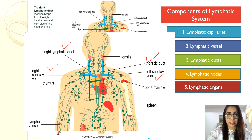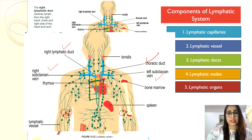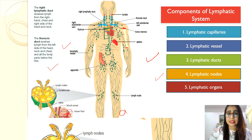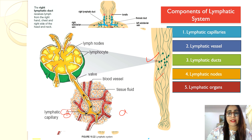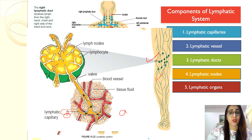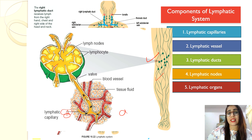Lymph nodes are small lumps along the lymphatic vessels. Each node contains a fibrous network and irregular vessels that act as filters to eliminate bacteria or foreign material. They contain two types of leukocytes: phagocytes for phagocytosis, and lymphocytes to produce antibodies. Lymph nodes are abundant in the neck, armpits, and thighs, and they swell when infected.